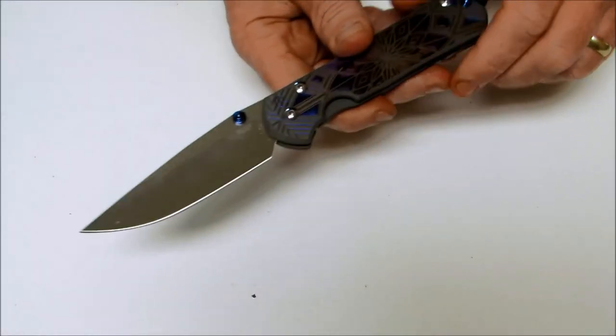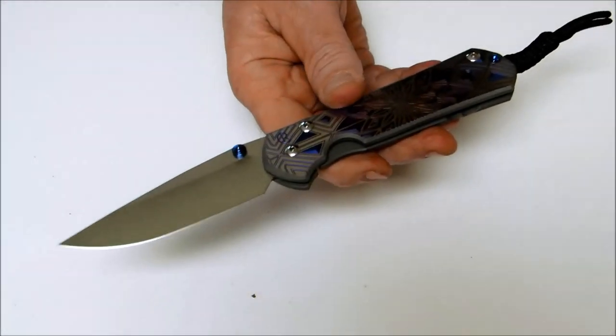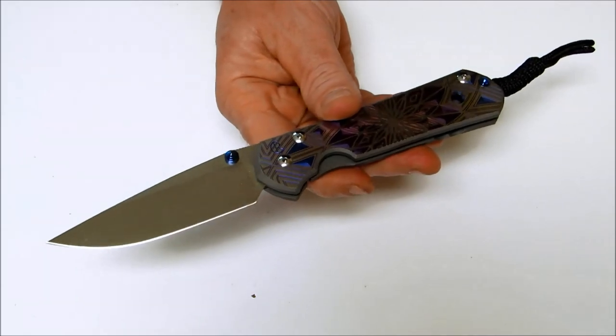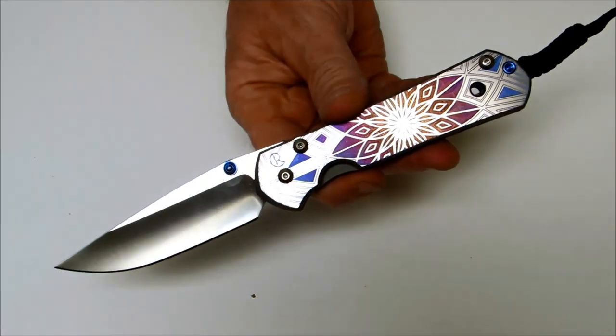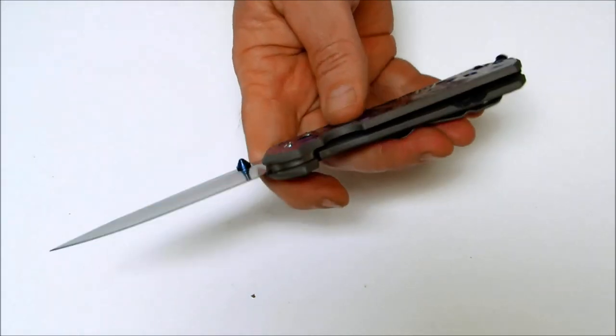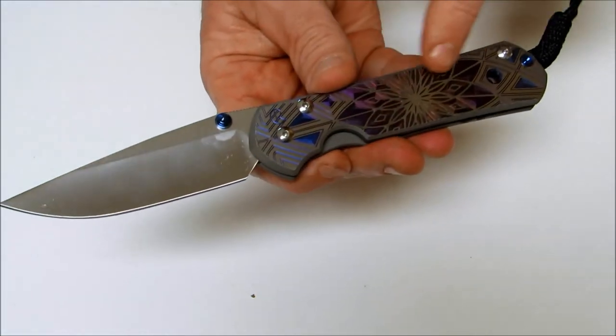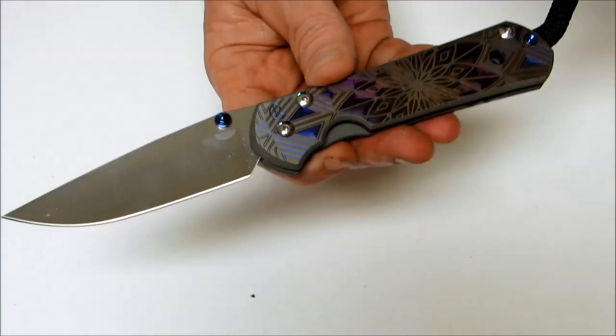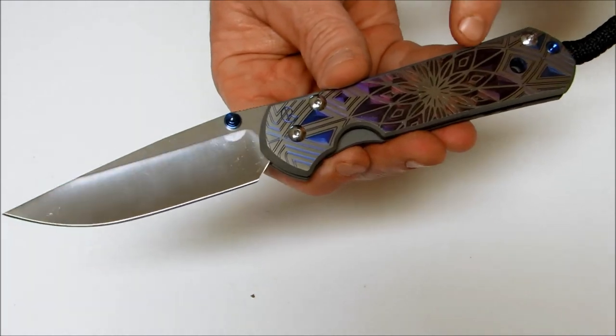Today on Osso Grande Knives TV we're looking at the Chris Reeve Large Sabenza 21 model. This is the CGG or computer generated graphic design, and this particular one is the geometric design.